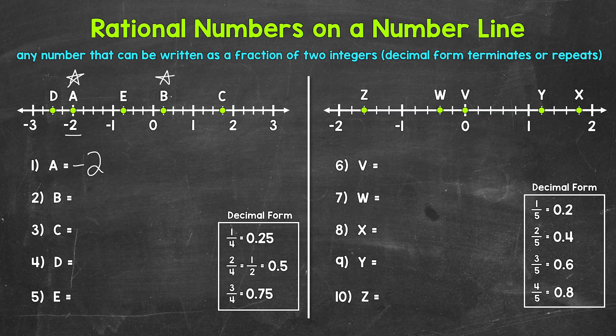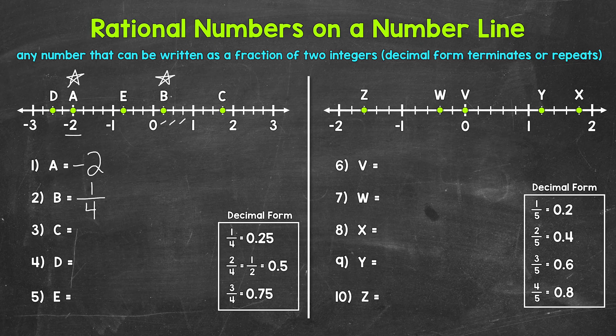Next we have point B, which is between zero and one. We have one fourth, two fourths (or one half), and then three fourths. So point B is at one fourth on the number line. Now I do want to mention, fractions can be written as decimals and decimals can be written as fractions, so it's good to be familiar with both.